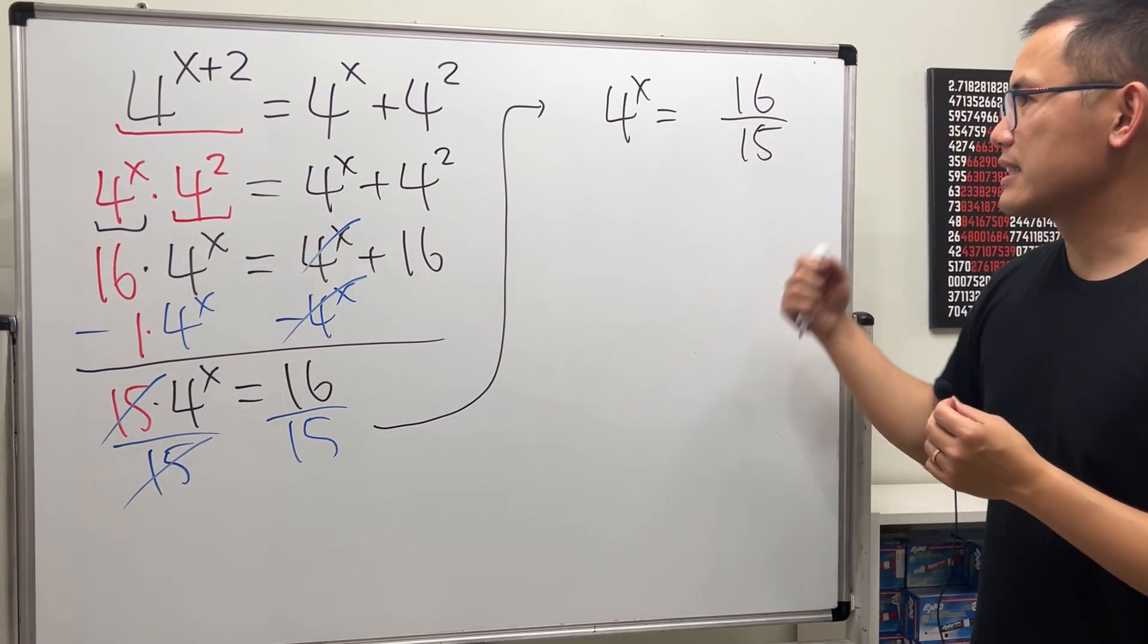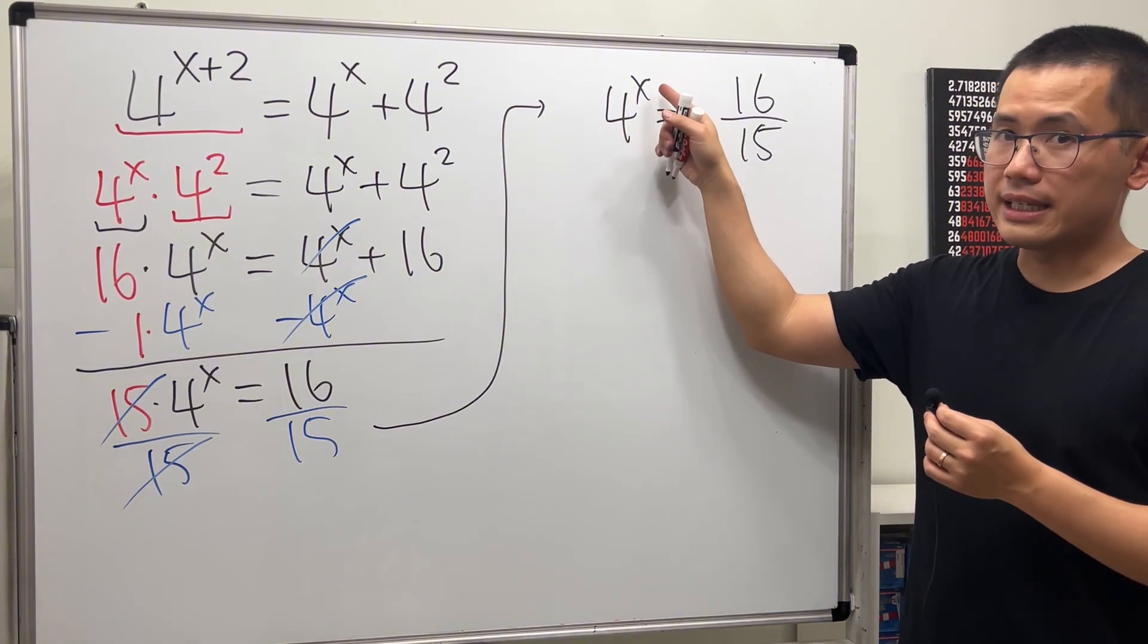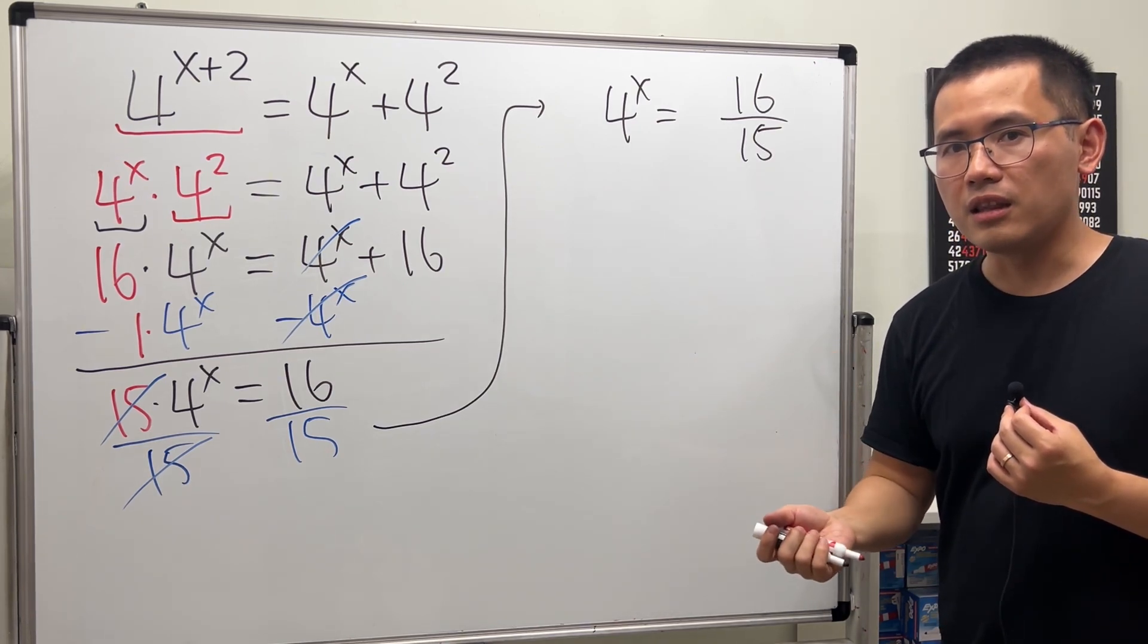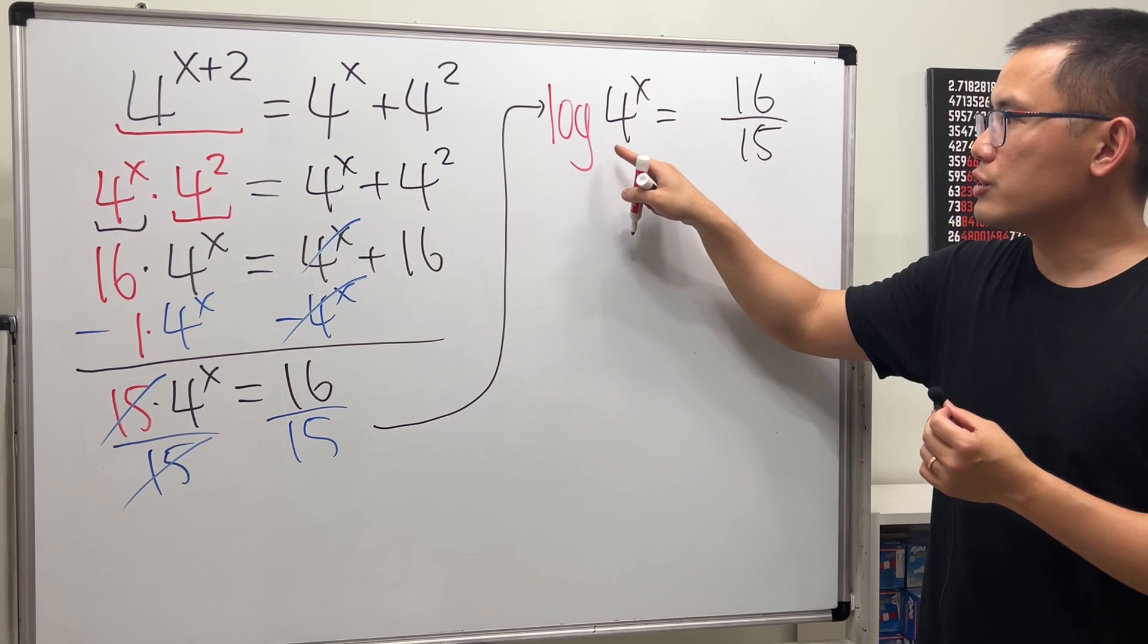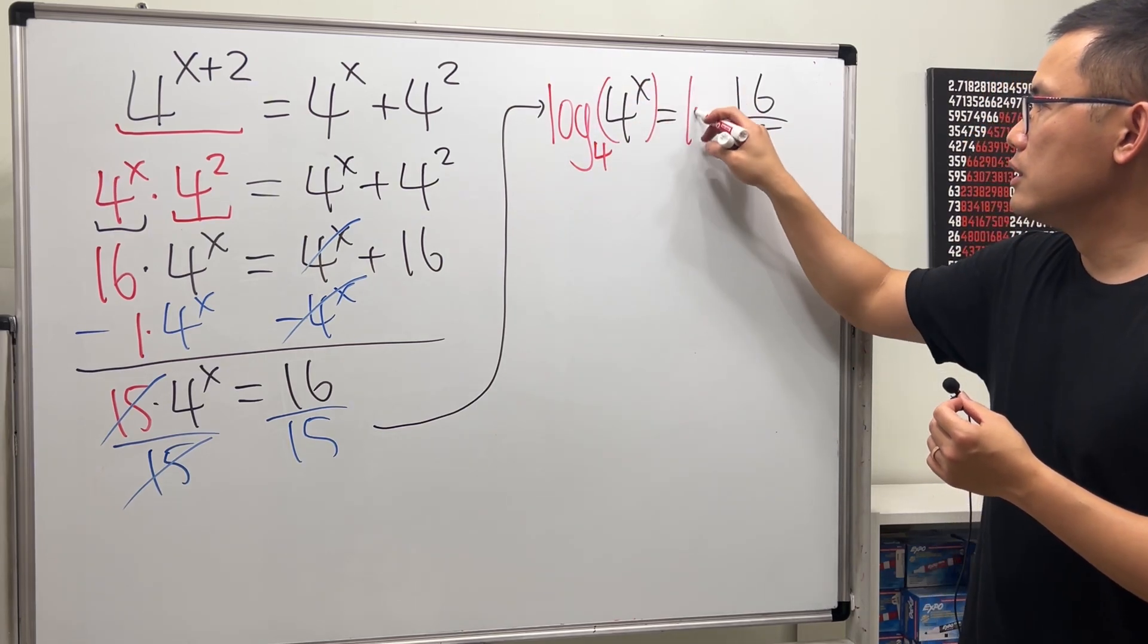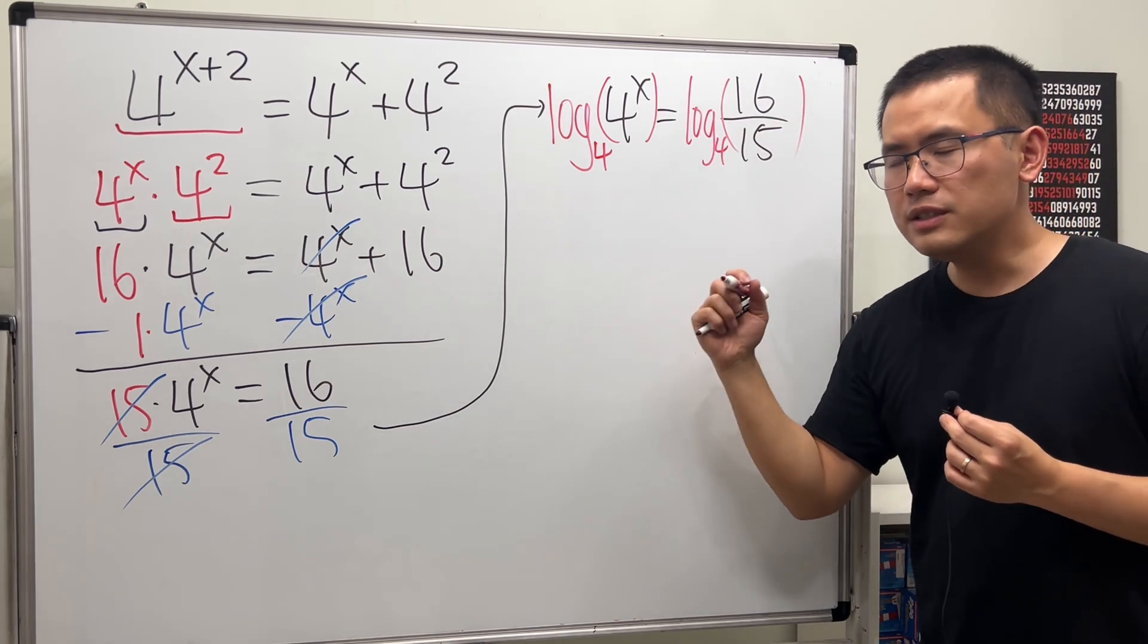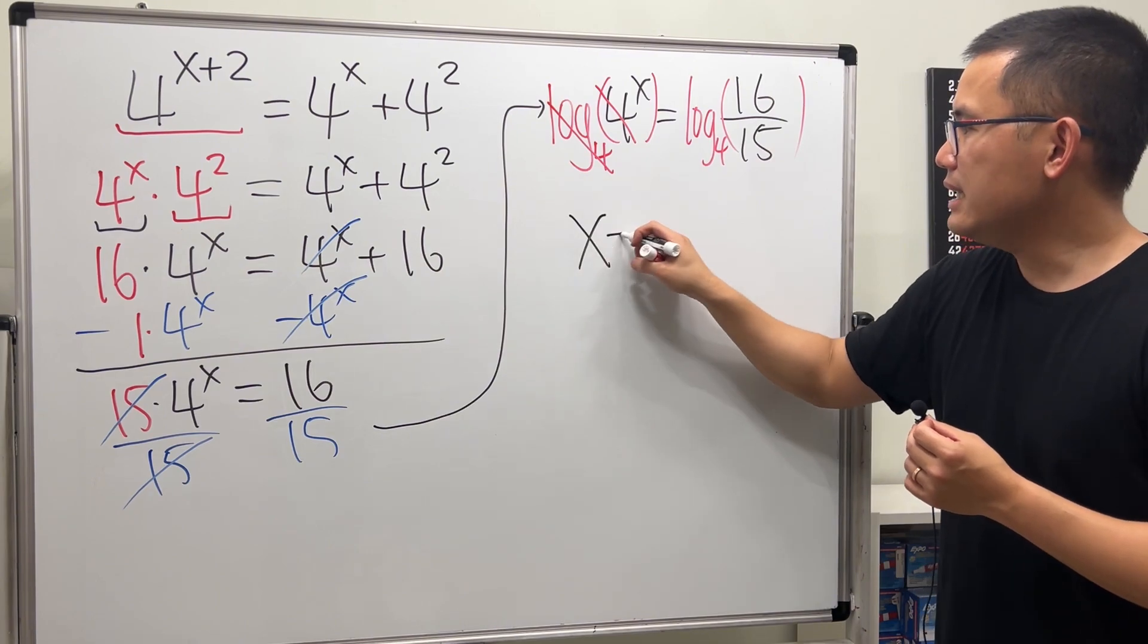This is an exponential equation. We just have base 4 raised to the x equals the number, so we can solve this by taking the log on both sides. Let's match log with this base, which is log base 4. Let's do the same to the other side. This way, this and that will cancel, so we get x equals log base 4 of 16 over 15.